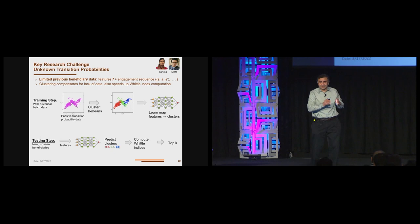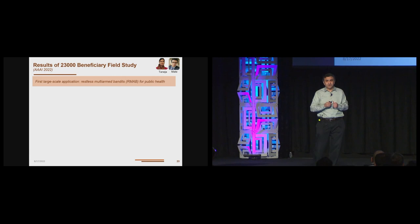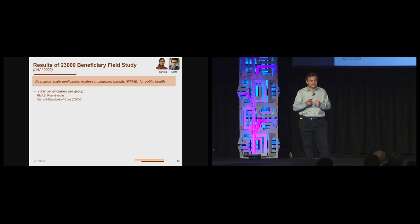So when a new beneficiary comes in, given her features, we can map her to a particular cluster center, infer transition probabilities. From then, we can compute a Whittle index and then choose the top K mothers to call. So now we are ready to at least do a field test. But quickly here, clustering not only compensates for the lack of data, but it speeds up the Whittle index computation. Rather than computing Whittle index for 100,000 arms, if there's only 100 clusters, we only compute a Whittle index 100 times.